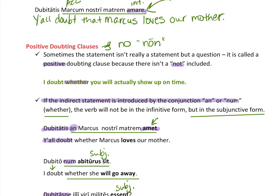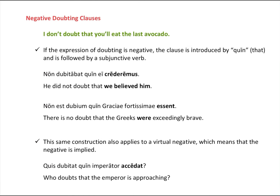Now let's talk about negative doubting clauses. In English: 'I don't doubt that you'll eat the last avocado.' What makes it negative is the 'don't' — there is a negative present. It's not a double negative; it simply contains a 'not.' If the expression of doubting is negative, the clause is introduced by quin, meaning 'that,' and is followed by a subjunctive verb.